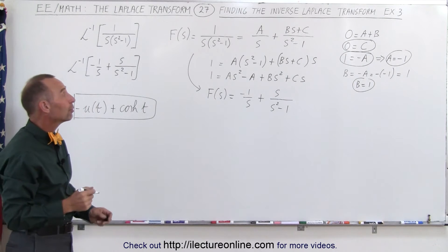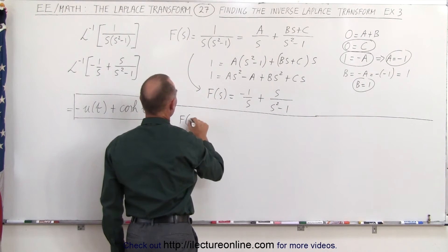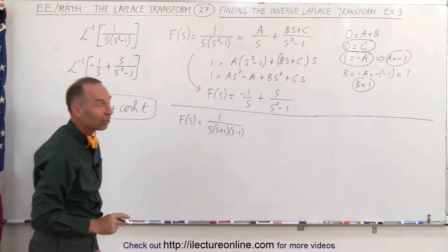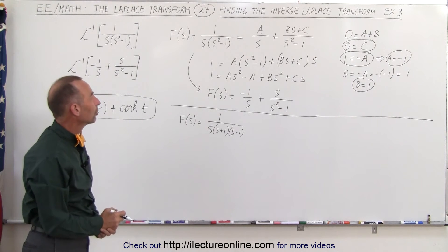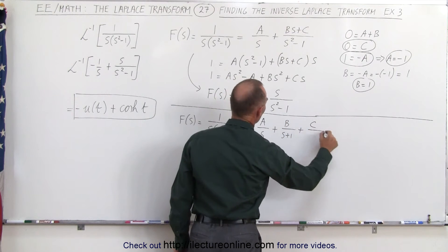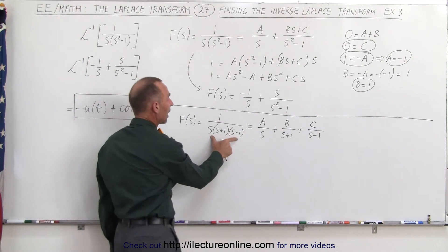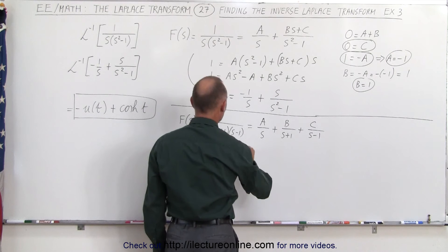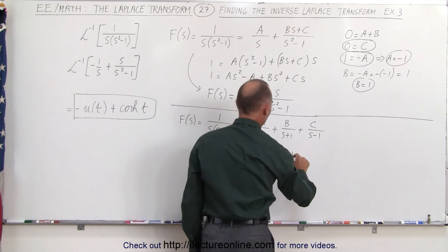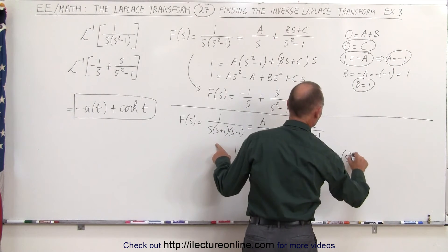Now let's explore the other method. We rewrite f(s) as 1 divided by s times s plus 1 times s minus 1, and decompose it as a over s, plus b over s plus 1, plus c over s minus 1. We multiply both sides by the common denominator s times s plus 1 times s minus 1, giving 1 equals a times s plus 1 times s minus 1, plus b times s times s minus 1, plus c times s times s plus 1.